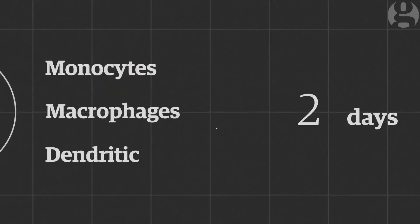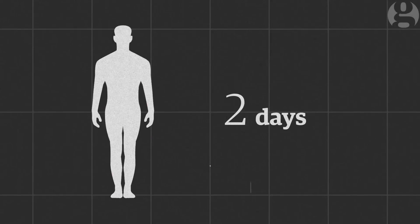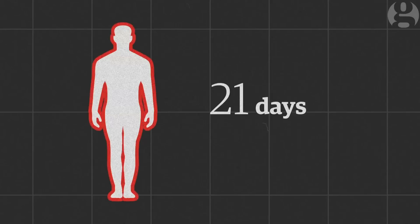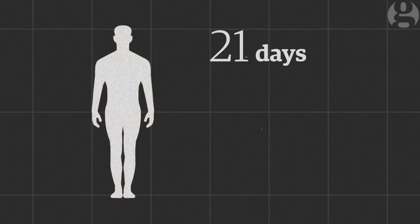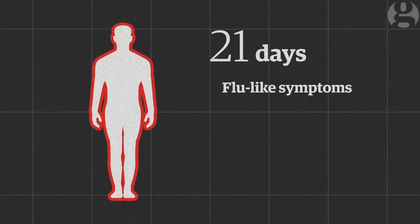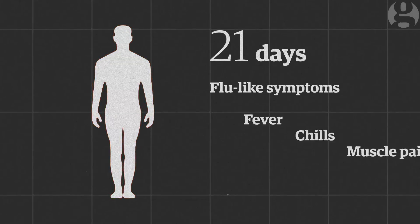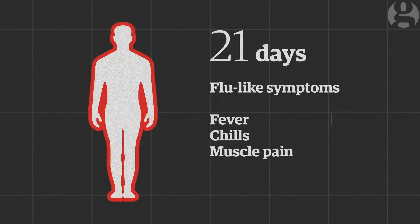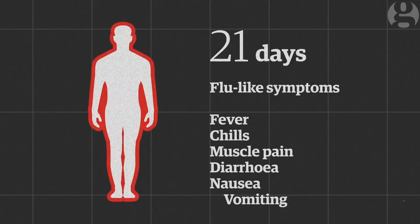The incubation period of the virus is 2 to 21 days. Then people start to show extreme flu-like symptoms: a sudden onset of fever, chills, muscle pain, alongside diarrhoea, nausea and vomiting.